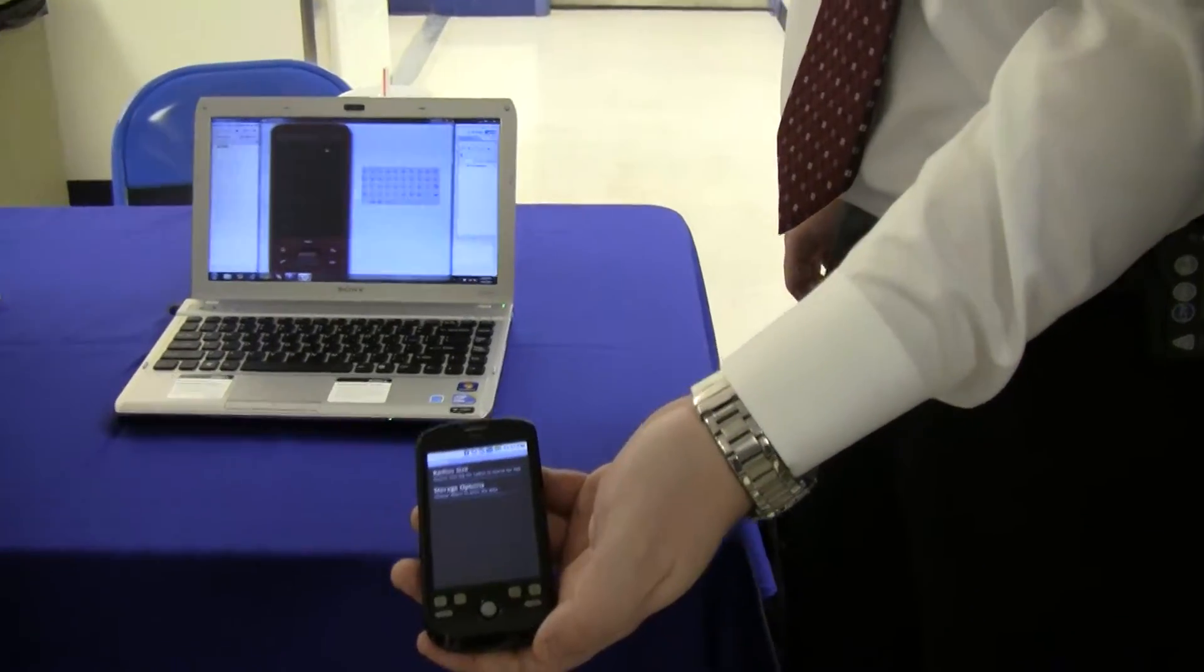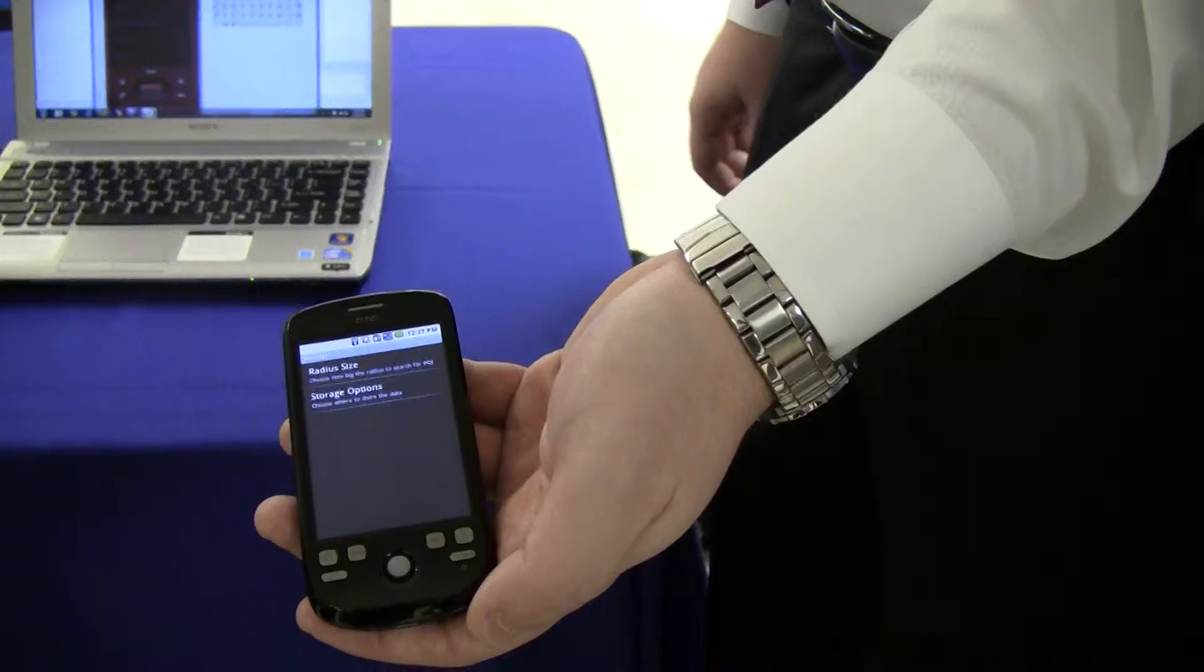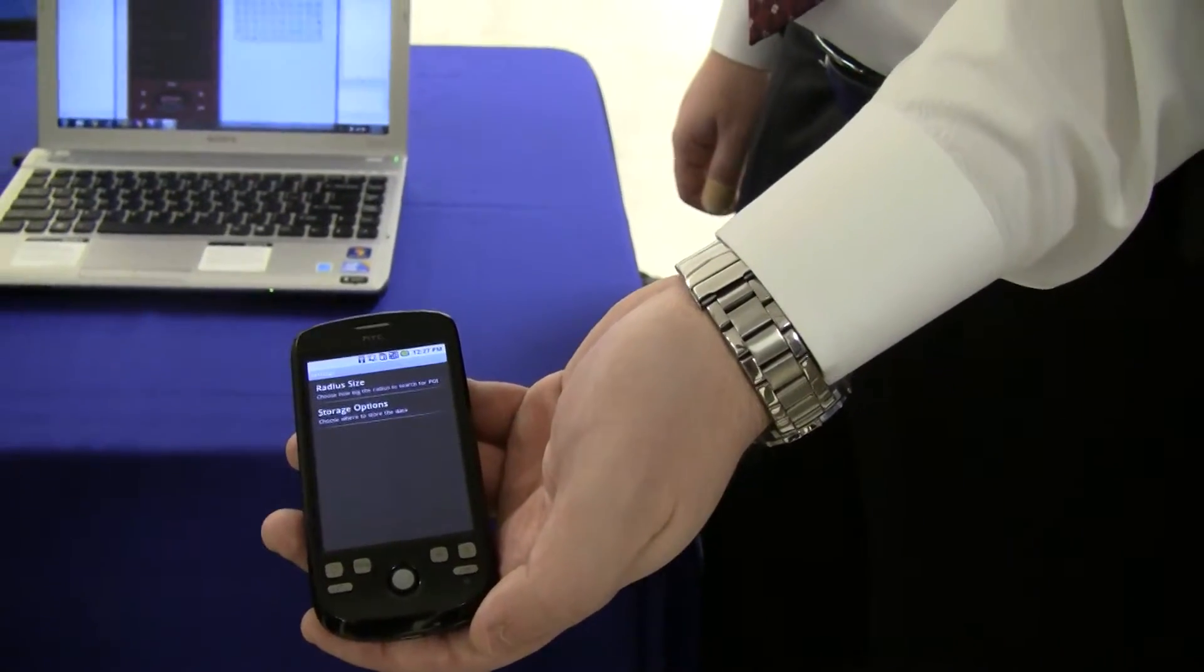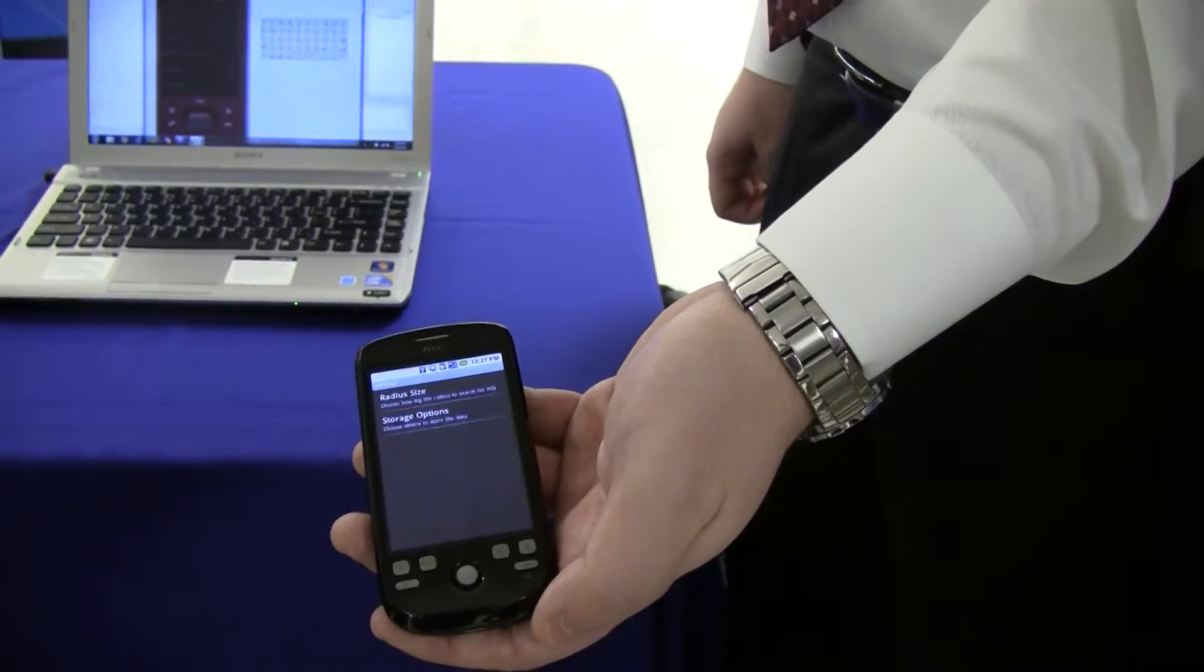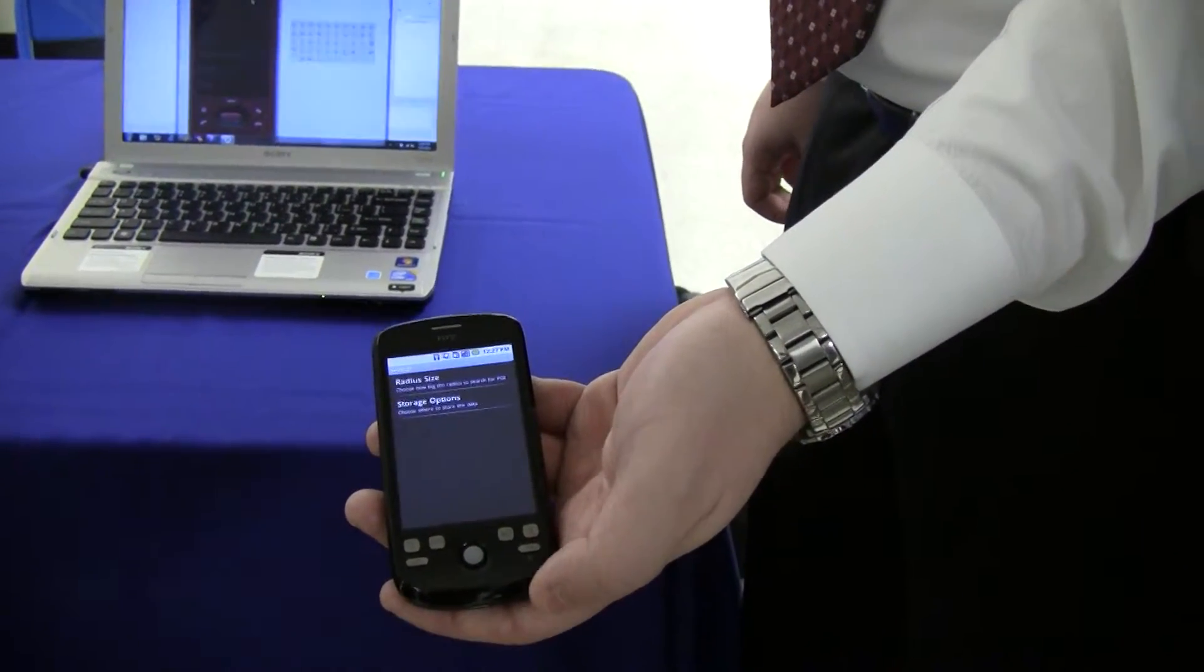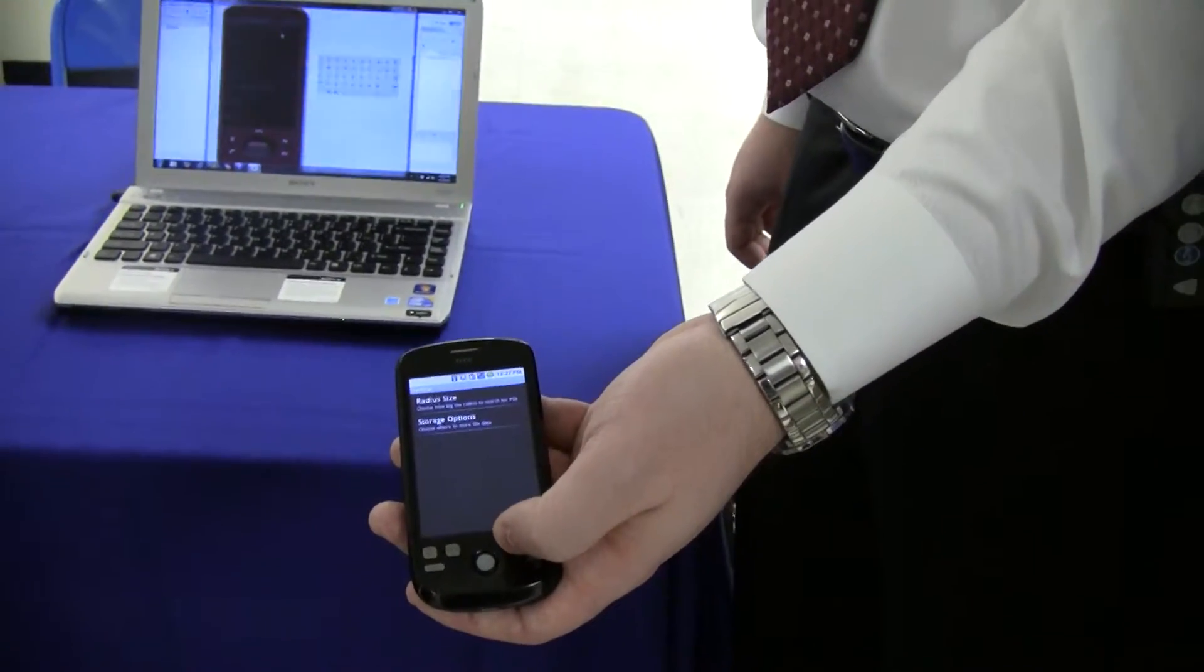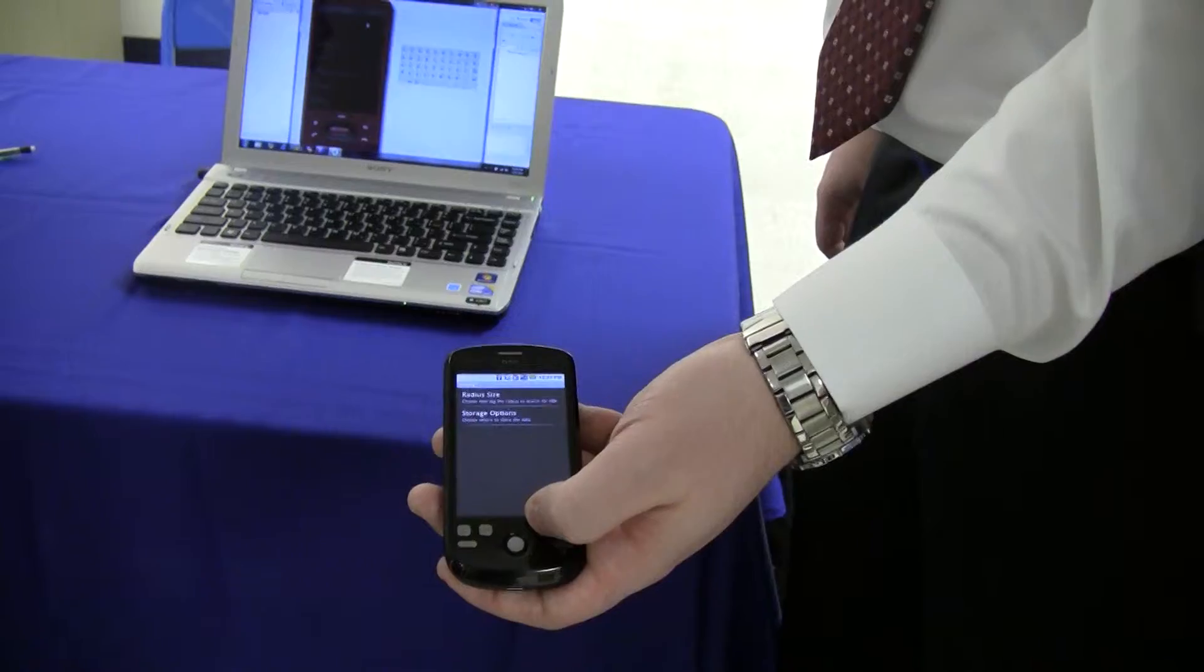Here we allow the user to change the radius size for the locate me. So if you were in a very large city, you would want to make the radius smaller to get less results. If you were in a more rural area, you may need to increase the radius size to get the results that you're looking for. We also give the user some storage options as to whether or not they want to save information onto their SD card and the phone's internal memory.